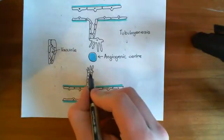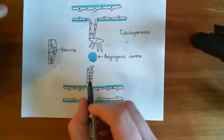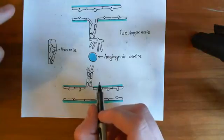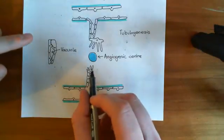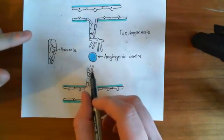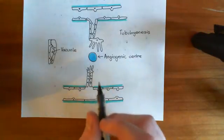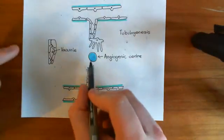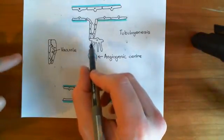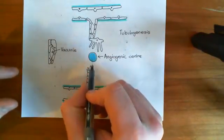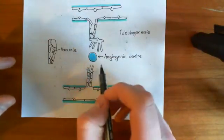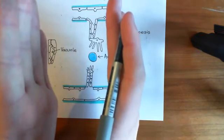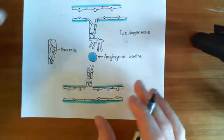At the top of the tube you then have your tip cells. The next thing that needs to happen is we need to get the two sprouts to meet one another, and this will allow fusion of them together. The two tip cells will meet initially and then the two blood vessels will fuse together.